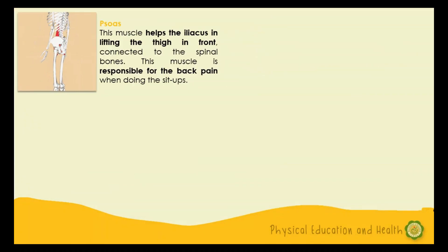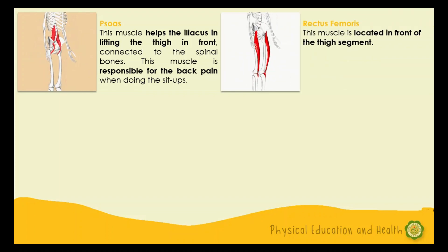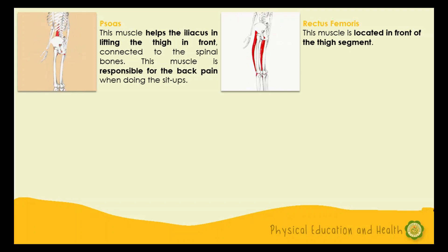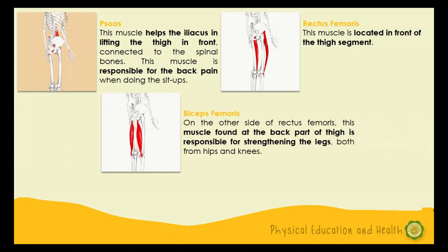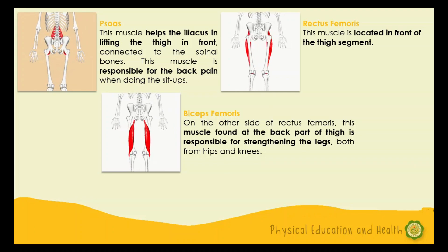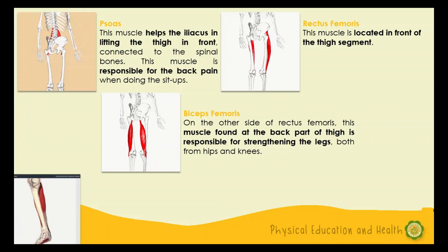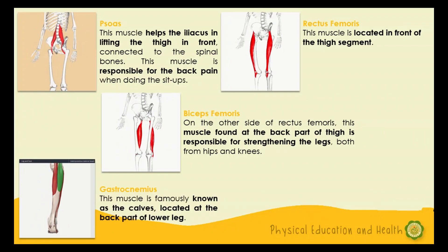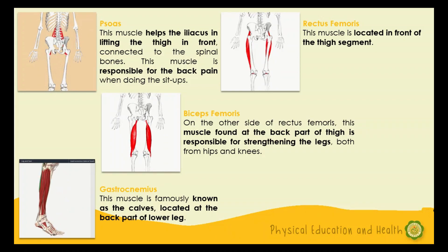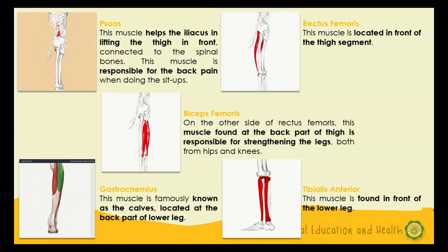The psoas muscle helps the iliacus in lifting the thigh in front. Connecting to the spinal bone, this muscle is responsible for back pain when doing sit-ups. The rectus femoris is located in the front of the thigh segment. The biceps femoris, on the other side of the rectus femoris, is found at the back part of the thigh and is responsible for strengthening the legs both from the hips and knees. The gastrocnemius, famously known as the calves, is located at the back part of the lower leg. Finally, the tibialis anterior is found in front of the lower leg.